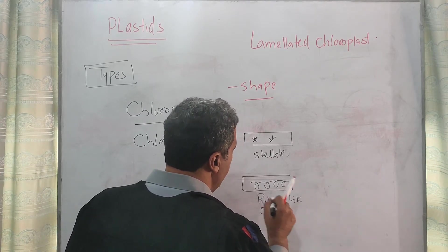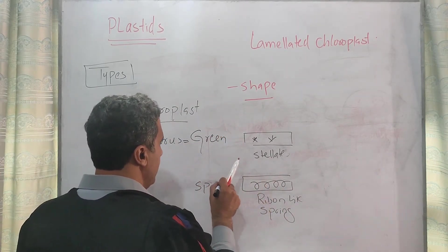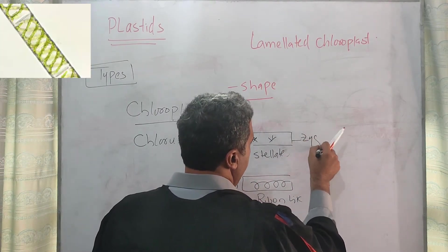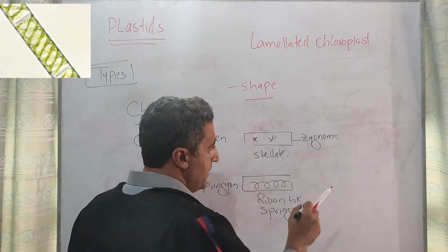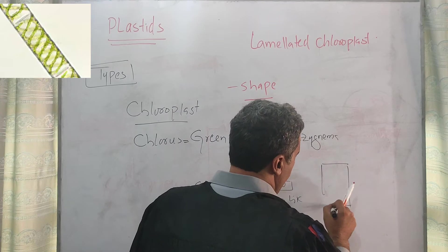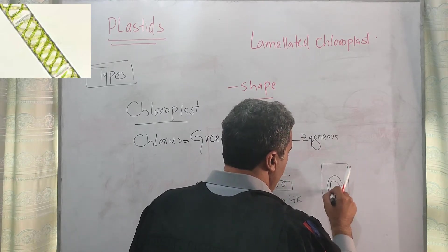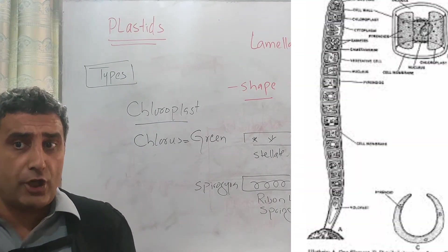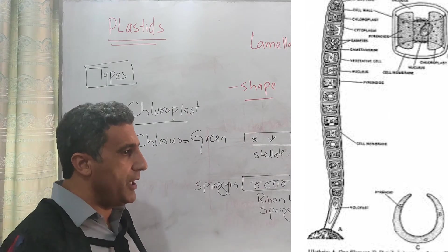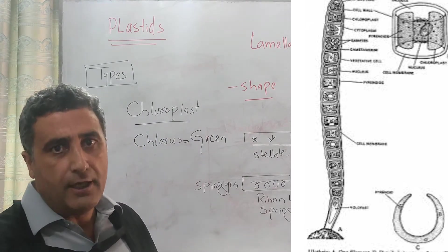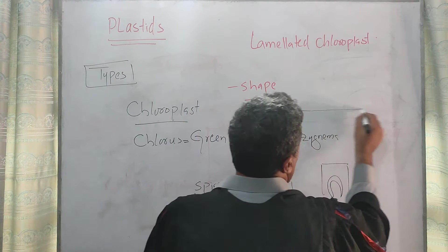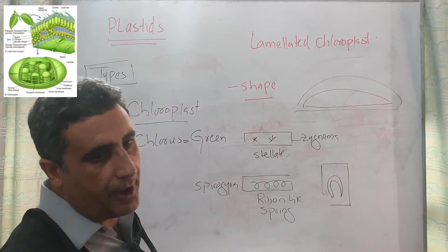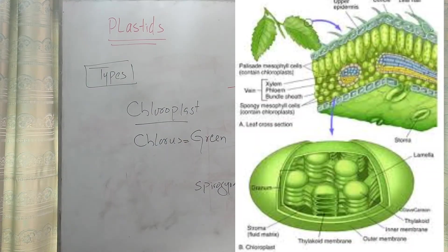In some algae the shape may be ribbon-like, as in Spirogyra. In some algae it may be reticulate. Some even contain disc shape, some reticulate. So shape varies with the plants. In general terms, when we make a saucer shape, that belongs to the dicots.